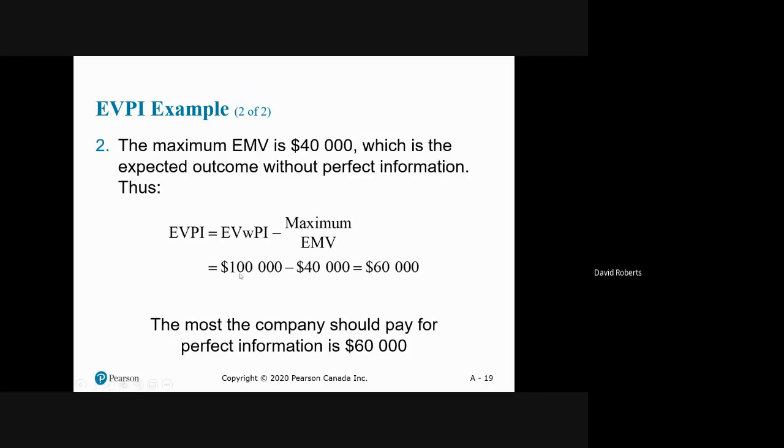You take the expected value with perfect information—that's if you could predict the future a hundred percent. You knew that the crowd was going to be large, you knew for a fact the crowd was going to be small, which is almost impossible. But if you have perfect information, you would have 100,000 dollar profit. Because of the uncertainty, you only have 40,000 dollar profit. So the expected value of perfect information is 60,000.